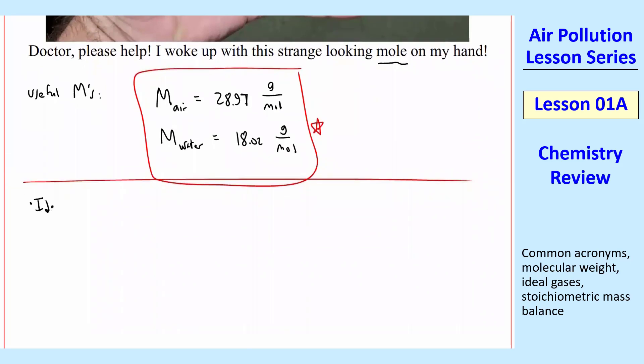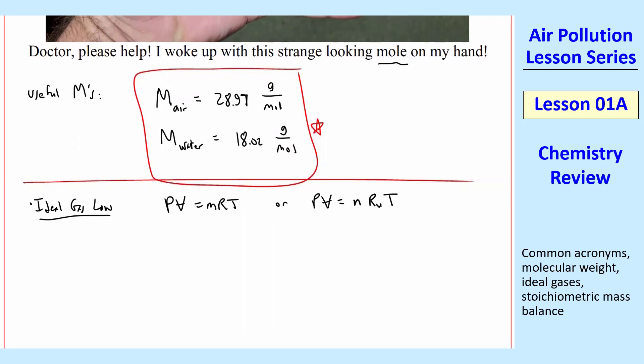All right, let's look at the ideal gas law and ideal gases in general. So the ideal gas law, PV equal MRT or PV equal NRuT. So either one of those. And by the way, my notation, which I also do in all my courses,